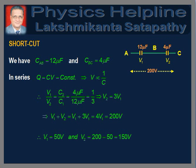Now we will discuss a shortcut method to arrive at the result. In a series combination of capacitors, voltage varies as 1/C. Therefore, V1/V2 = C2/C1 = 1/3, which implies V2 = 3V1. Therefore, V1 + V2 = 4V1 = 200 volts, giving V1 = 50 volts and V2 = 200 − 50 = 150 volts, which completes the answer to the question.